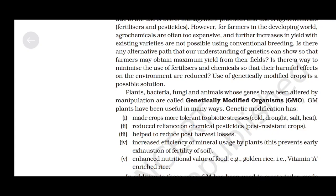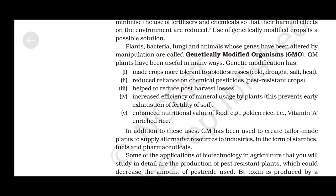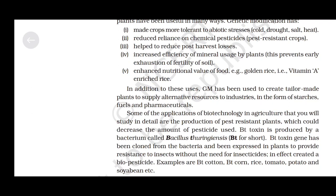GM plants have been useful in many ways. Genetic modification has: first, made crops more tolerant to abiotic stresses like cold, drought, salt, and heat; second, reduced reliance on chemical pesticides through pest-resistant crops; third, helped reduce post-harvest losses; fourth, increased efficiency of mineral usage by plants, preventing early exhaustion of soil fertility; and fifth, enhanced nutritional value of food — for example, golden rice, which is vitamin A-enriched rice. GM has also been used to create tailor-made plants to supply alternative resources to industry in the form of starches, fuels and pharmaceuticals.